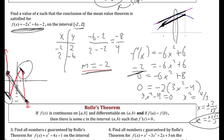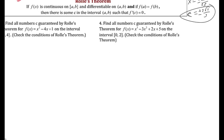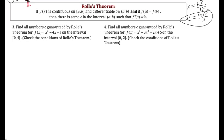So assuming the function is differentiable, which implies it's continuous, that has to happen at least once — that's what the mean value theorem guarantees. Rolle's theorem is actually just a specific piece of mean value theorem, a very specific example of it.